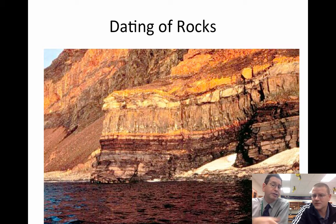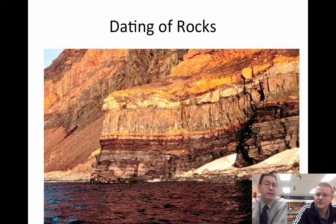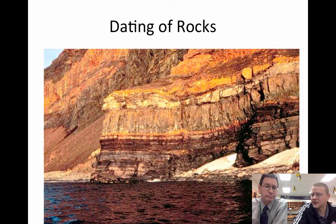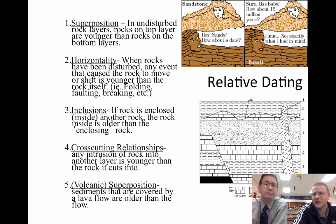Thicker layers probably take a little longer to form than the thinner ones, so it helps us determine how long something's actually been there. But we can't get the exact age unless we radiometrically date the rocks in those layers, but we can get a good estimate, or relative age, based on these five rules.